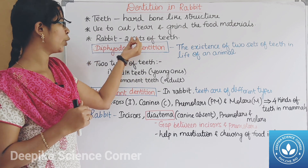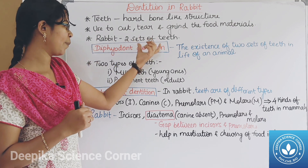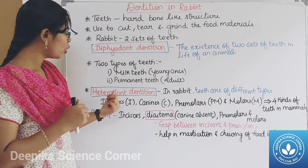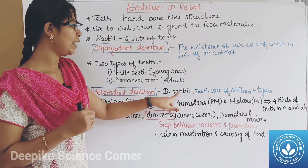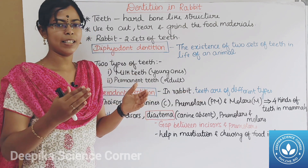This is called diphyodont dentition. Heterodont dentition means the rabbit's teeth are of different types.